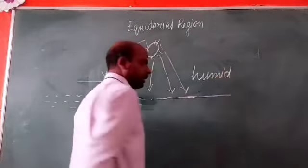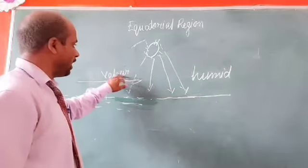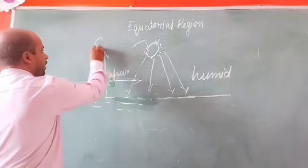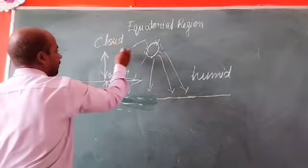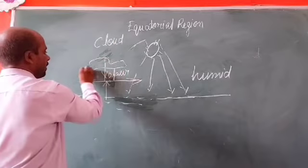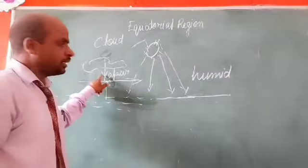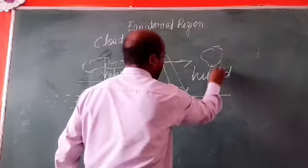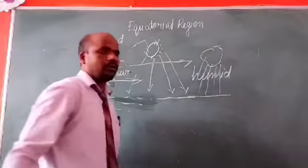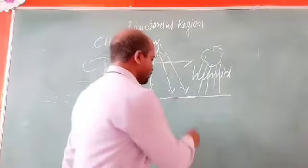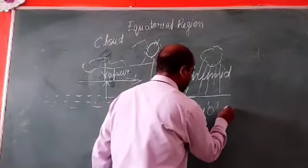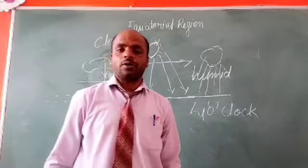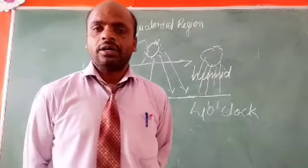The vapor rises high and forms clouds. Carried by winds toward the land, the clouds bring rainfall. The rainfall typically occurs after noon, around 4 o'clock. So the equatorial region is called the '4 o'clock rainfall region.'